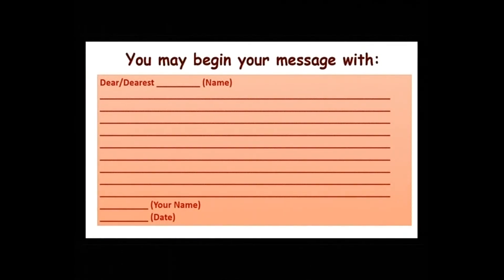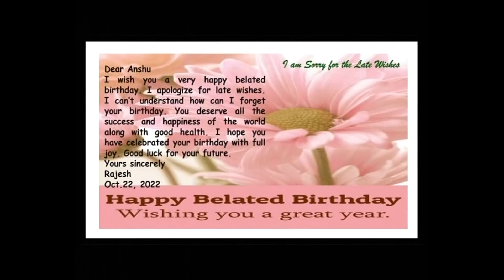You may begin your message with 'Dear' or 'Dearest', then write the receiver's name, then your message, and end with your name and date. Dear or dearest to baad apne friend da naam likho. Aur nicche your name — thoda apna naam — te pheer date. Sample message: Dear Anshu, I wish you a very happy belated birthday. I apologize for late wishes. I can't understand how I could forget your birthday. You deserve all the success and happiness of the world along with good health. I hope you have celebrated your birthday with full joy. Good luck for your future. Yours sincerely, Rajesh. October 22, 2022.